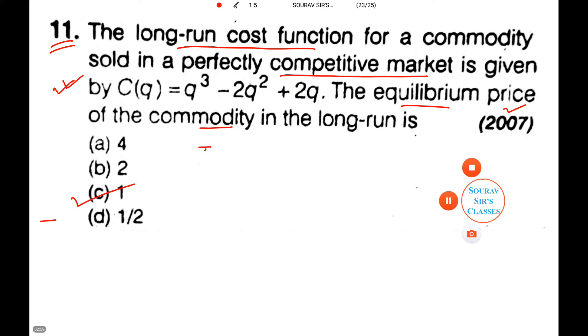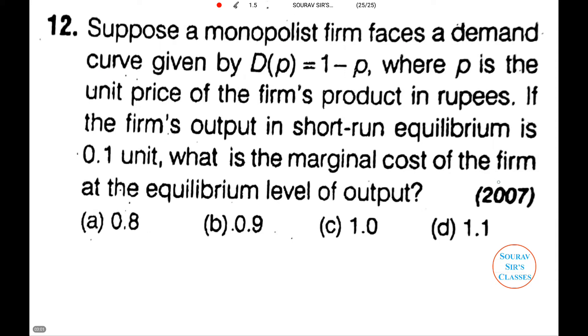Let us do one more sum. The next sum appeared in the year 2007. The question is: suppose a monopolist firm faces a demand curve given by D(p) = 1 - p. Now if the firm's output in the short-run equilibrium is 0.1 unit, we need to comment on the marginal cost of the firm at the equilibrium level of output.